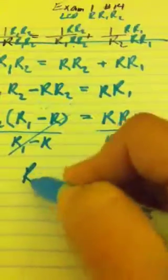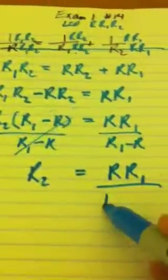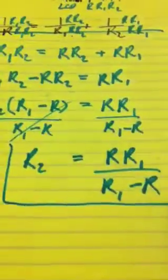Those will cancel, and I'll get R2 equals R R1 over R1 minus R. And that is what they want.